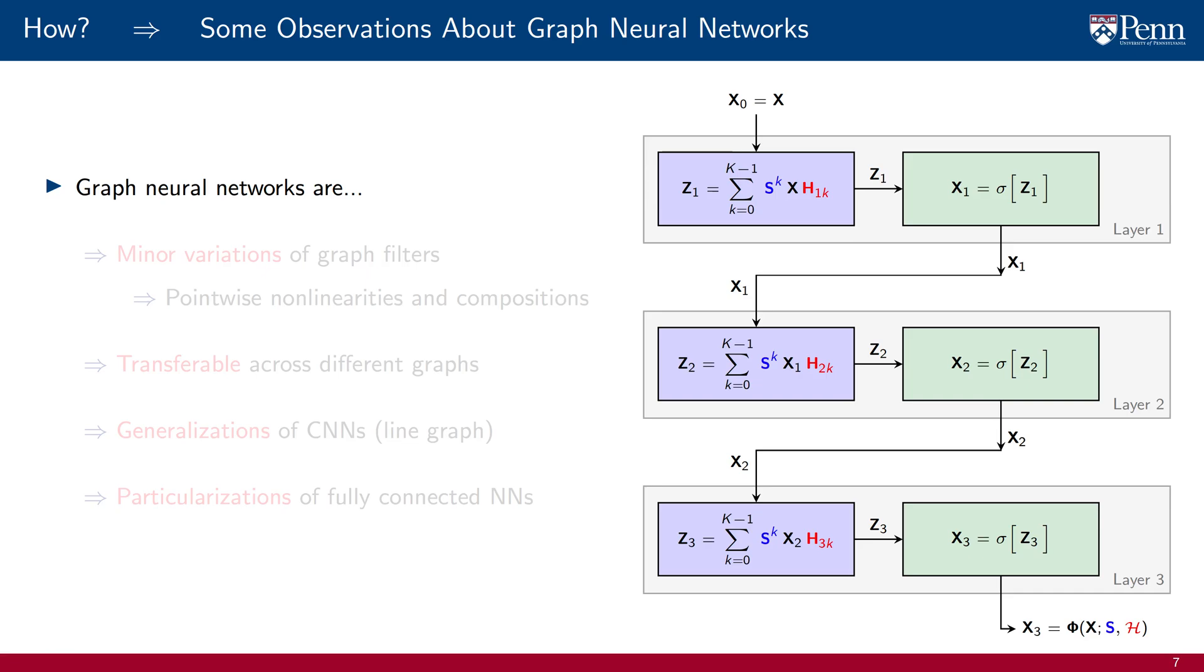Let's close the how question with some observations. Graph neural networks are, first and foremost, minor variations of graph filters. We just add nonlinearities and compositions. If you want to understand a GNN, you need to understand graph filters. GNNs are transferable across different graphs. A trained GNN is a trained tensor. It can be instantiated in any graph we please. Of course, we want to transfer across graphs that we expect to be similar in some way or another. GNNs are generalizations of CNNs because we recover a CNN by particularizing to the line graph. And they are also particularizations of fully connected neural networks as all neural networks are.